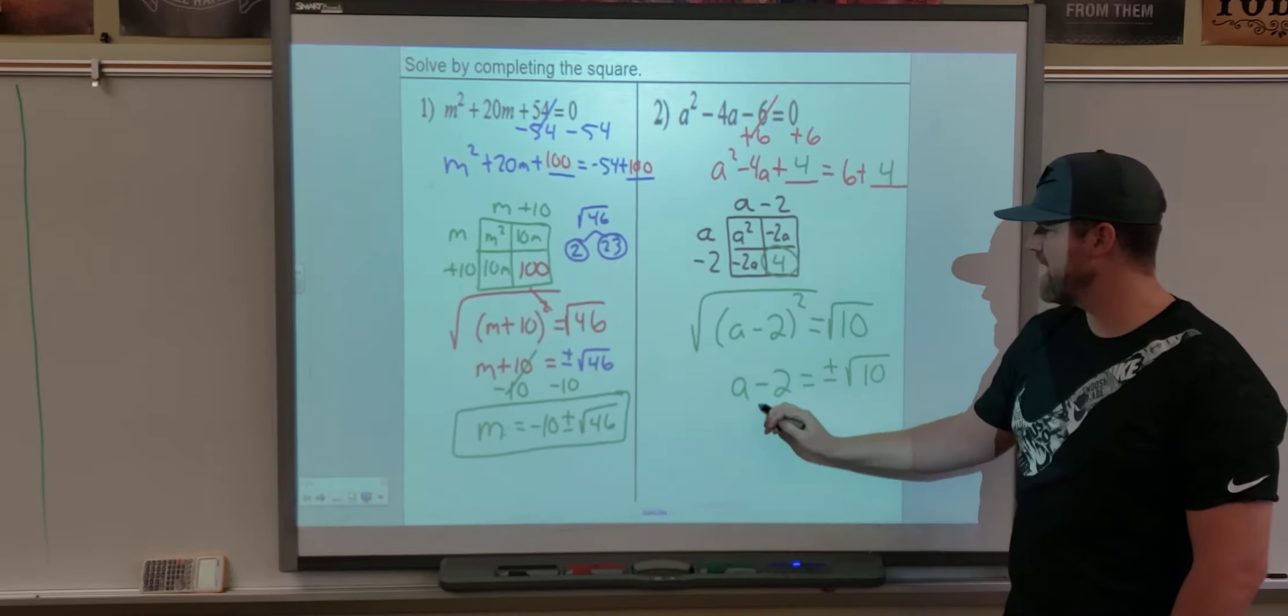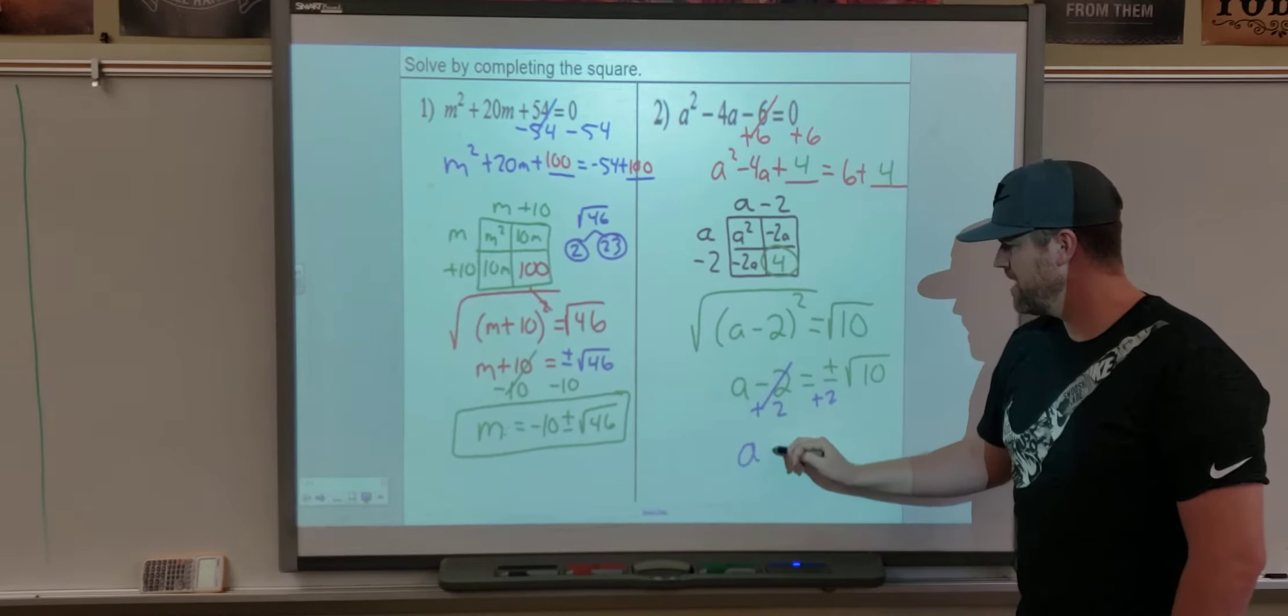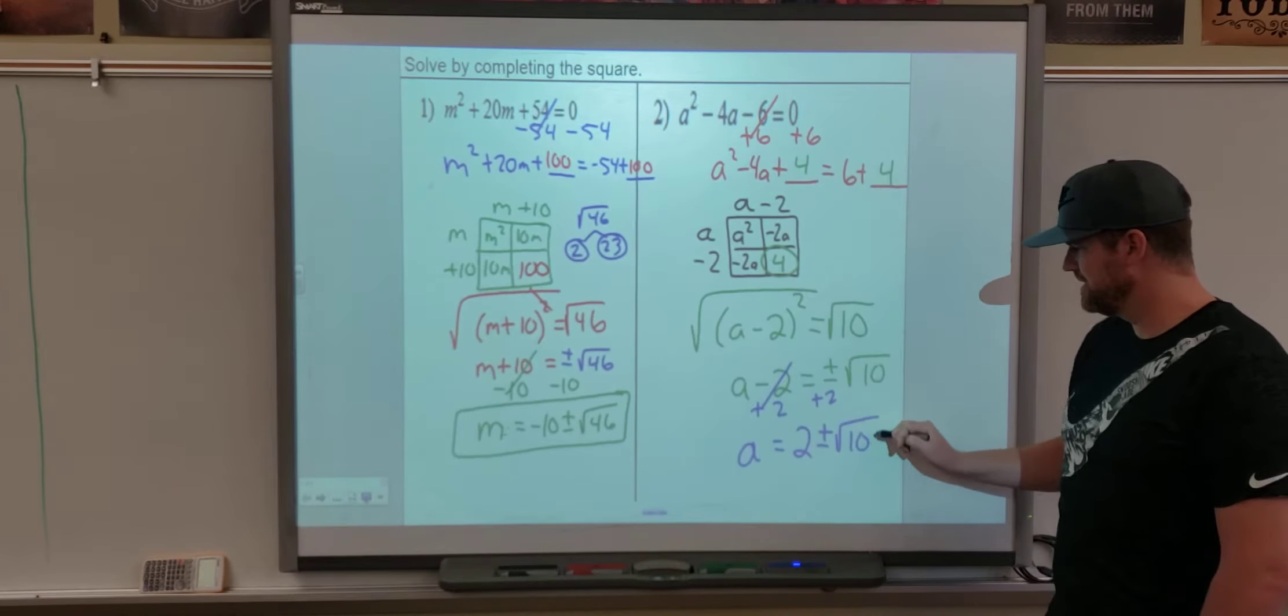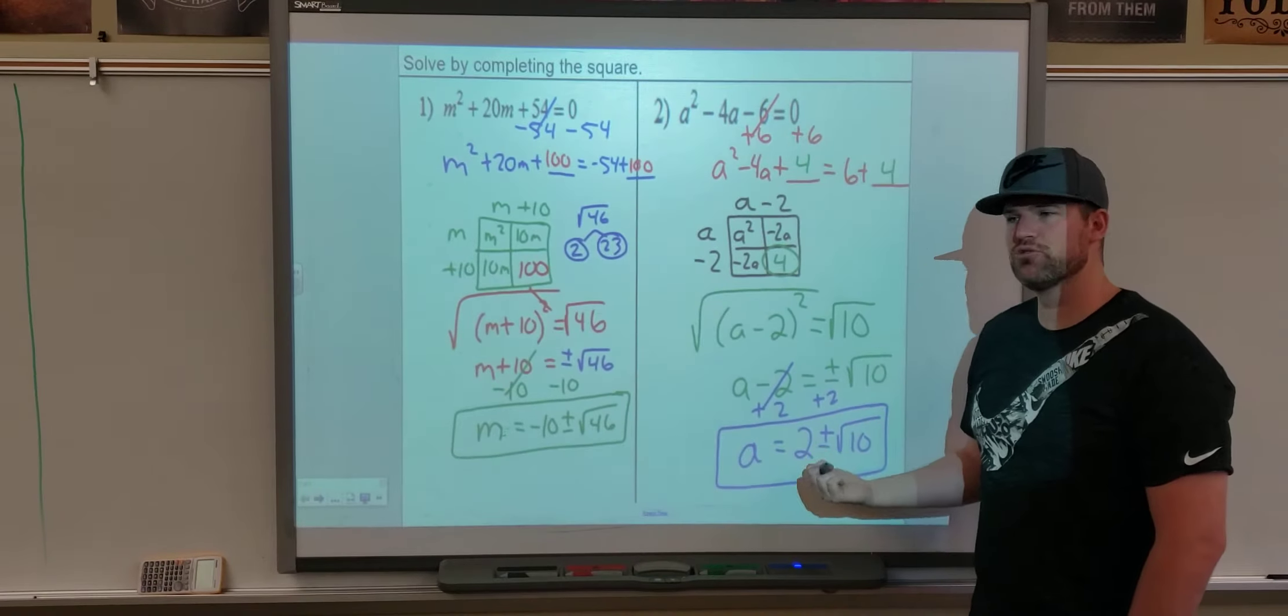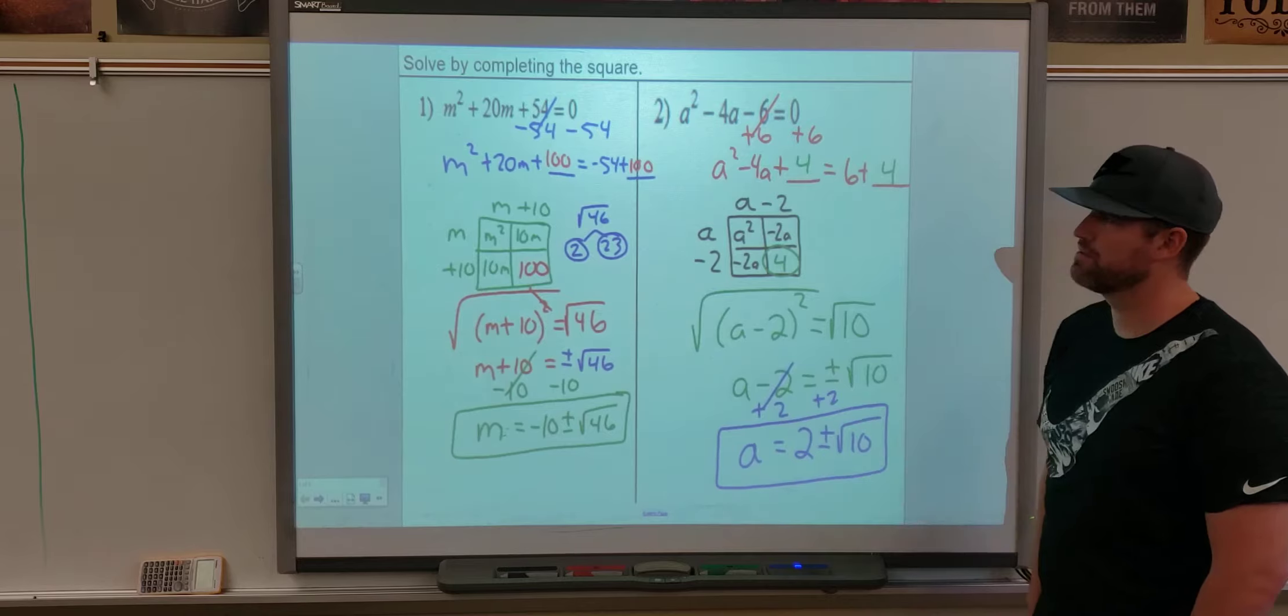And finally, add the 2 to both sides. And we get A is equal to 2 plus or minus square root of 10. Again, this is two solutions: 2 plus the square root of 10 and 2 minus the square root of 10.